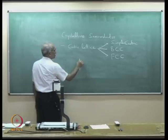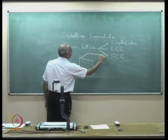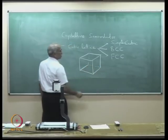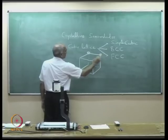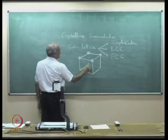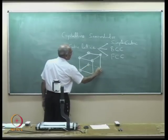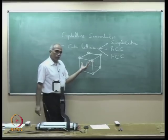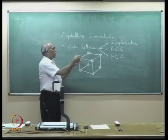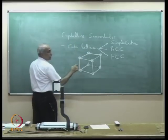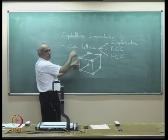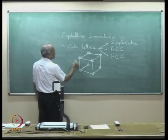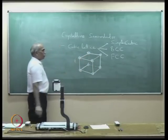In simple cubic, the atoms are located at the corners of the cube. There are 8 corners, but in the entire crystal structure each cubic cell is shared — every atom is shared with 8 other cells. Therefore, the contribution of each atom per cell is 1/8.